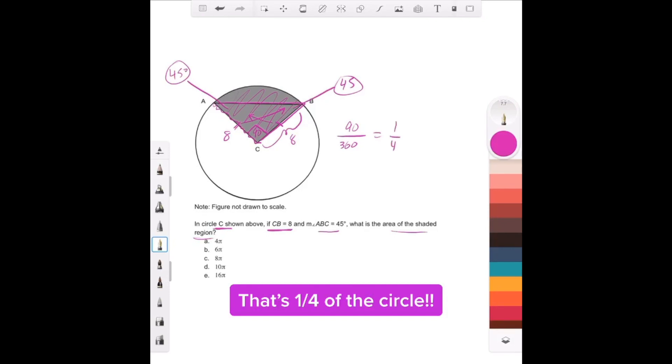So all we do is the area of the circle, which is pi radius squared. Here, the radius is 8, so it's pi times 8 squared, which is 64 pi. And then we have to do 1/4 of that, because we're only dealing with 1/4, which would be 16 pi.